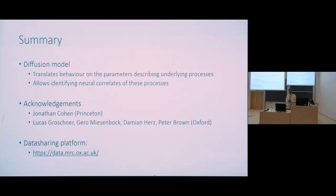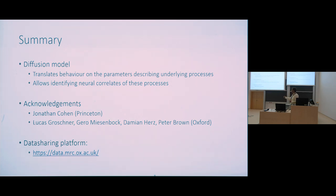To summarize: the diffusion model is a tool which translates behavioral data into parameters describing the underlying choice process, and it also allows identifying neural correlates of these processes. This work was done together with Jonathan Cohen from Princeton and collaborators from Oxford. Finally, I would like to advertise the data sharing platform from our institute in Oxford, where you can download various datasets, brain atlases, and different tools for data analysis. Thank you very much.